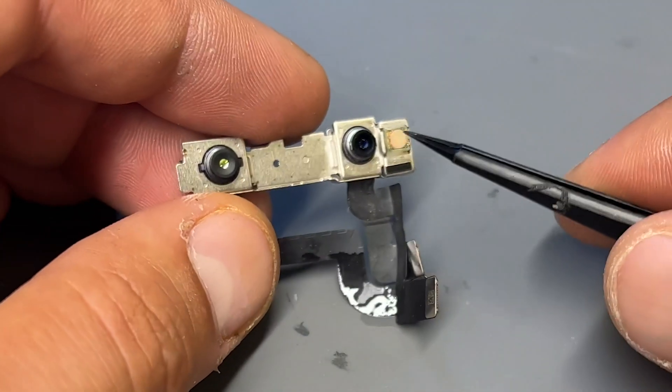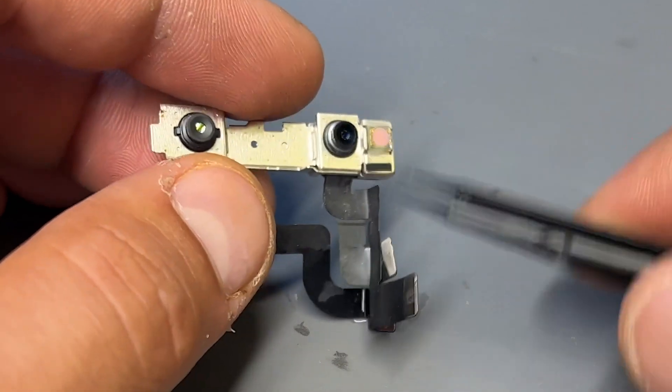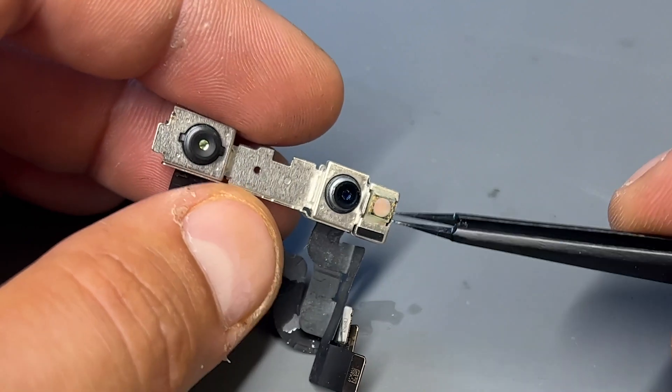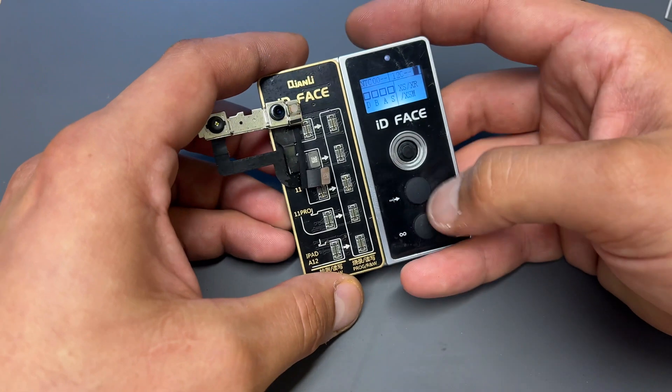Usually when you get the TrueDepth camera message, the problem isn't actually being caused by the camera but instead the dot projector, which is very sensitive and vulnerable to problems. I then plug in the dot projector to this Face ID reader and test functionality.